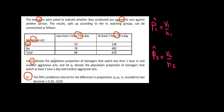P1 is going to be the population proportion of teenagers who watch less than one hour and conduct aggressive acts. And P2 is going to be the proportion who watch at least one hour and conduct aggressive acts. What's going to be the 95% confidence interval for the difference in proportions?